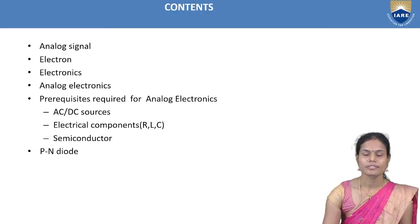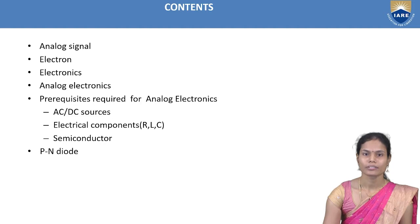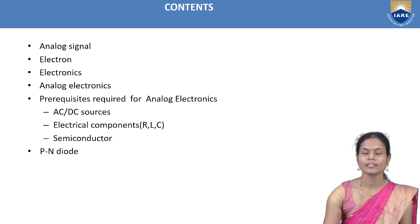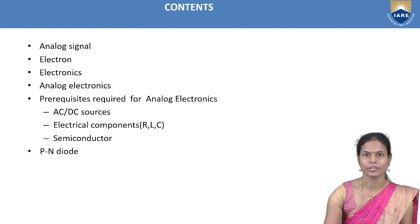These are the contents I am going to discuss now: analog signal, what is meant by analog signal and electron, what is meant by electron and electronics and analog electronics, what are the prerequisites required to understand the analog electronics subject — including AC/DC sources, electrical components, and semiconductor materials.